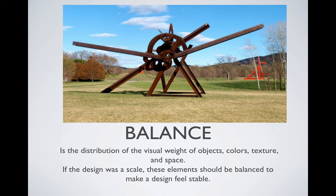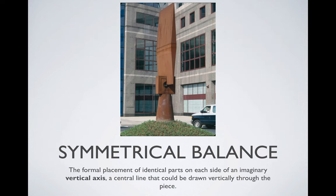The next principle is balance, which has several different aspects. The formal definition is the distribution of visual weight of objects, color, texture, and space. If the design were a scale, these elements should be balanced to make a design feel stable. Essentially, with any type of balance, we're looking for a visual anchor that tells the viewer the piece is secure in some aspect.